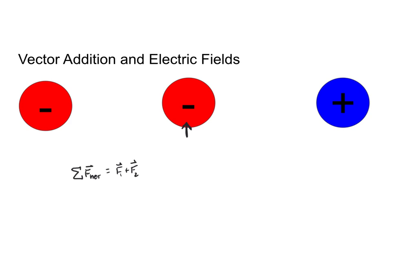Let's start by looking at what the force of my left charge is on my center charge. Since these two charges are repelling each other because they are like charges, the left charge is going to make my center charge move to the right. So the direction of the force on the middle charge due to the charge on the left is rightwards.